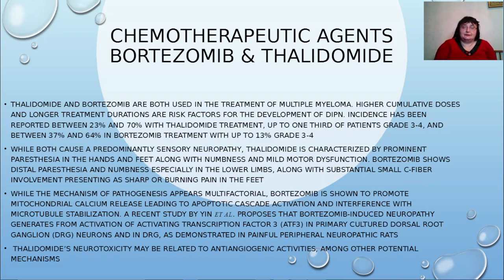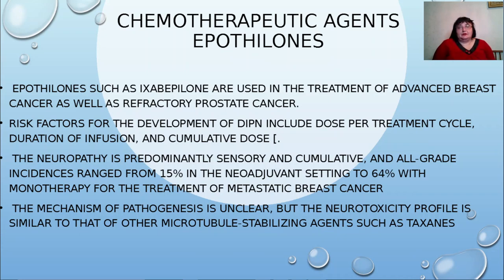Epithelones such as ixabepilone are used in treatment of advanced breast cancer and refractory prostate cancer. Risk factors for DIPN include dose per treatment cycle, duration of infusion, and cumulative dose. The neuropathy is predominantly sensory and cumulative; incidence ranges from 15% in the neoadjuvant setting to 64% with monotherapy for metastatic breast cancer. The mechanism of pathogenesis is unclear but the neurotoxicity profile is similar to other microtubule-stabilizing agents such as taxanes.